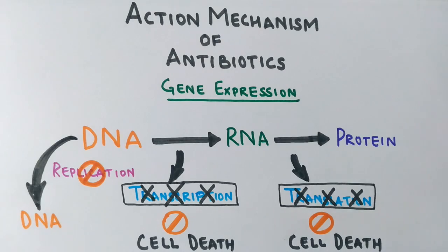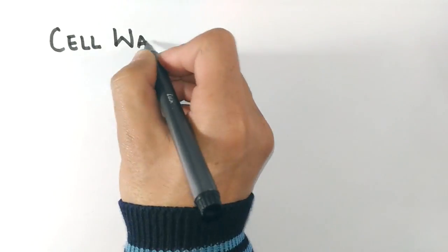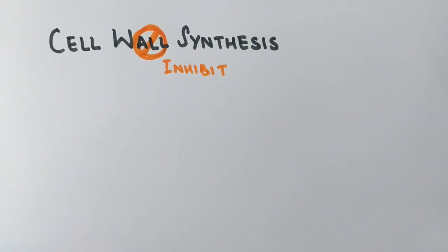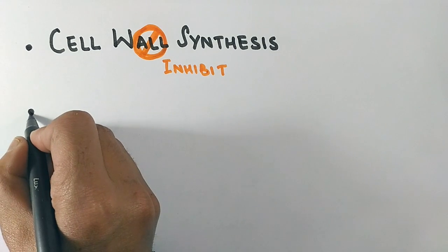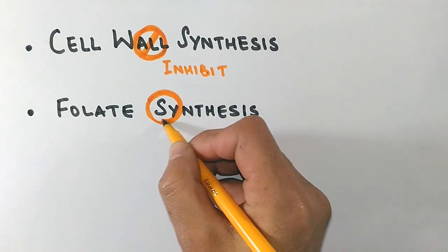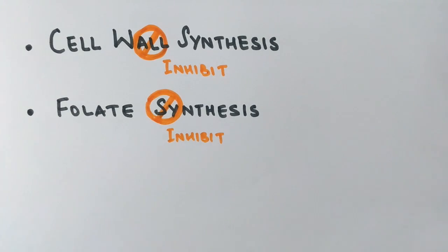Antibiotics have also two other targets. One is cell wall synthesis—they inhibit cell wall synthesis here, causing the death of bacteria like penicillin. Another target is folate synthesis, which is one of the important metabolic processes that occurs in bacteria. It's also getting targeted by antibiotics, causing the death of bacteria.